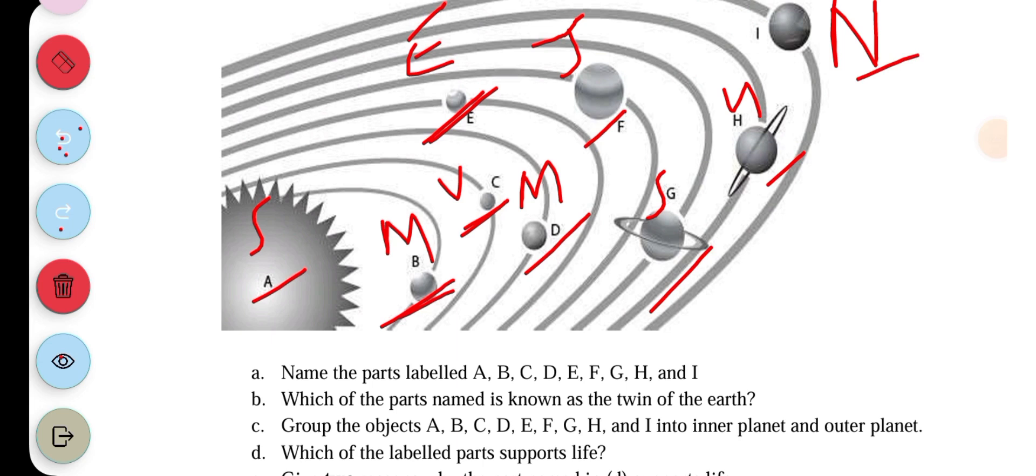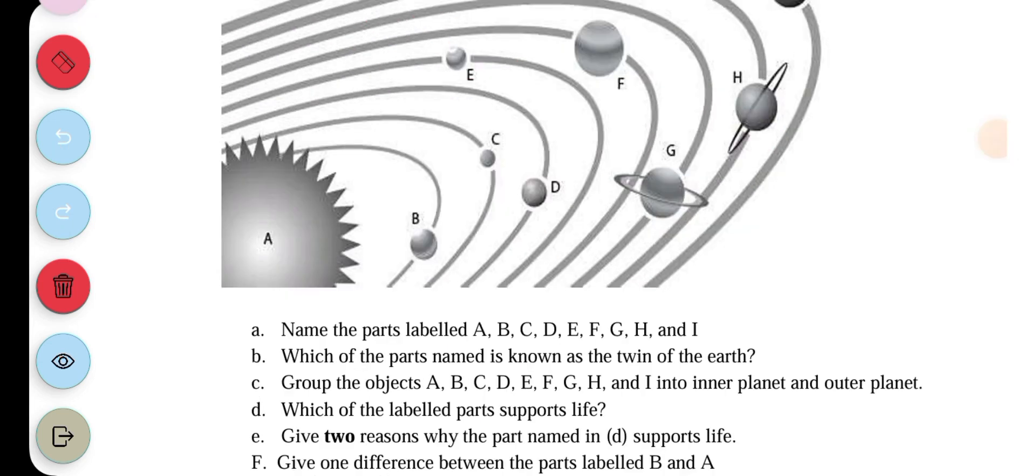Question D: Which of the labelled parts supports life? We are asked to give two reasons why the part named in D supports life. One, it has vegetation. Two, it has water.